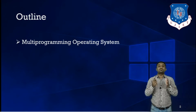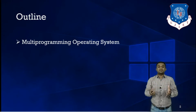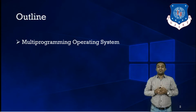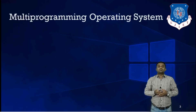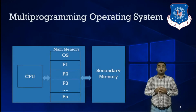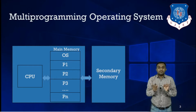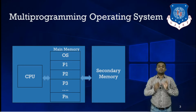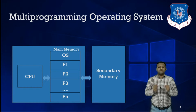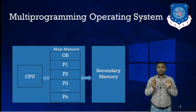So utilization of CPU resource is very poor when we are talking about spooling, and that is what we are going to address with the help of multiprogramming operating system. In the case of multiprogramming operating system, keep in mind that we are still dealing with a single processor system — a uniprocessor machine containing only one CPU.